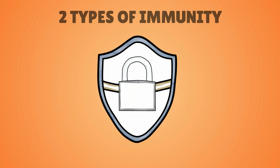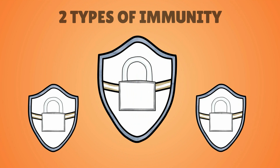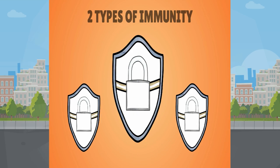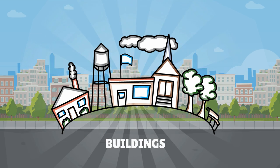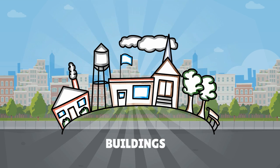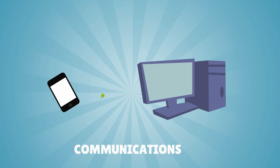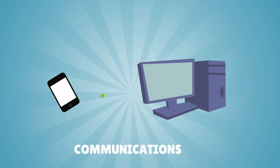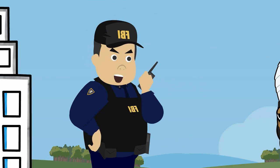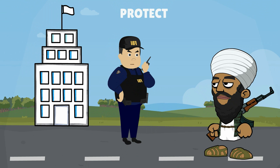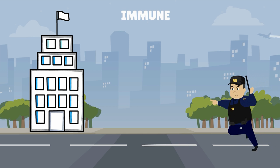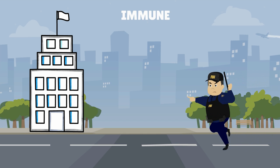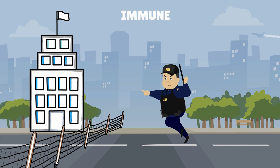Diplomatic immunity is divided into two categories. First, immunity of the embassy premises and properties, like the buildings, vehicles, archives, and diplomatic communications. While the hosting authority has a duty to protect the diplomatic premises against any damage, the embassy remains immune from any law enforcement measures.